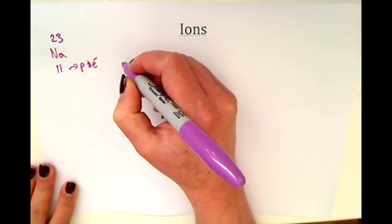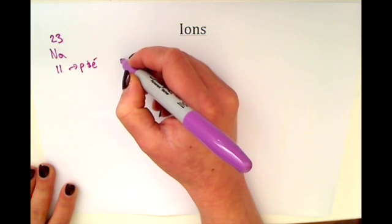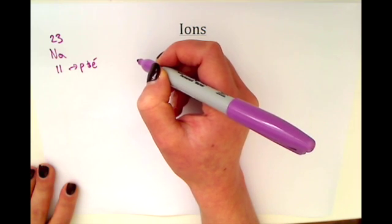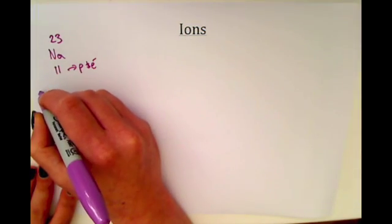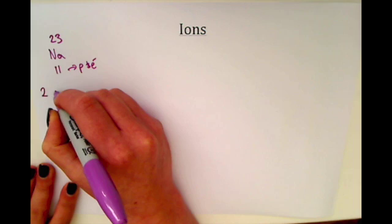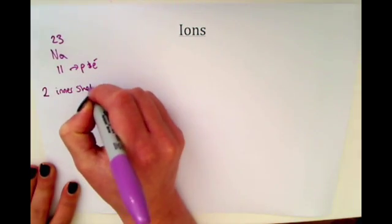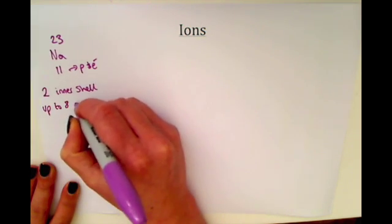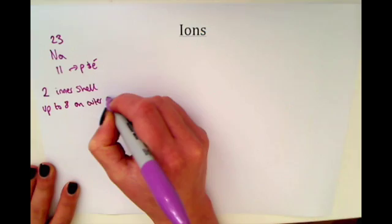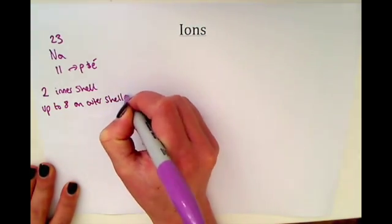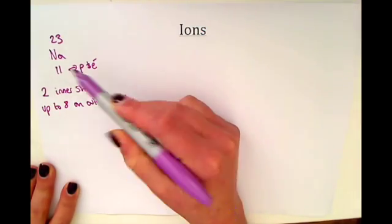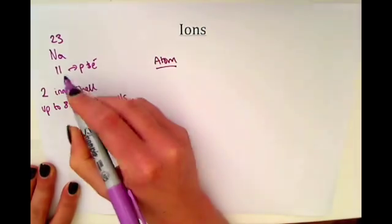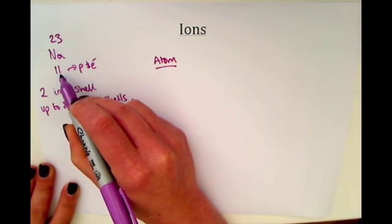For a sodium atom, the rule about electrons in electron shells is that you can have two on the inner shell and then up to eight on the outer shells. So all other shells can have up to eight electrons. If we were to draw the atom of sodium we would need to draw the electron structure with 11 electrons.